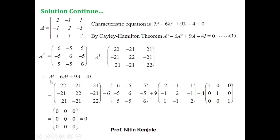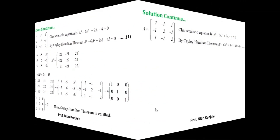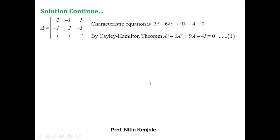So we have proved that A³ − 6A² + 9A − 4I = 0, that is equation (1) holds. We can now say the Cayley-Hamilton theorem is verified. We move on to the second sub-question: finding A inverse using the Cayley-Hamilton theorem. By the theorem we already have equation (1).